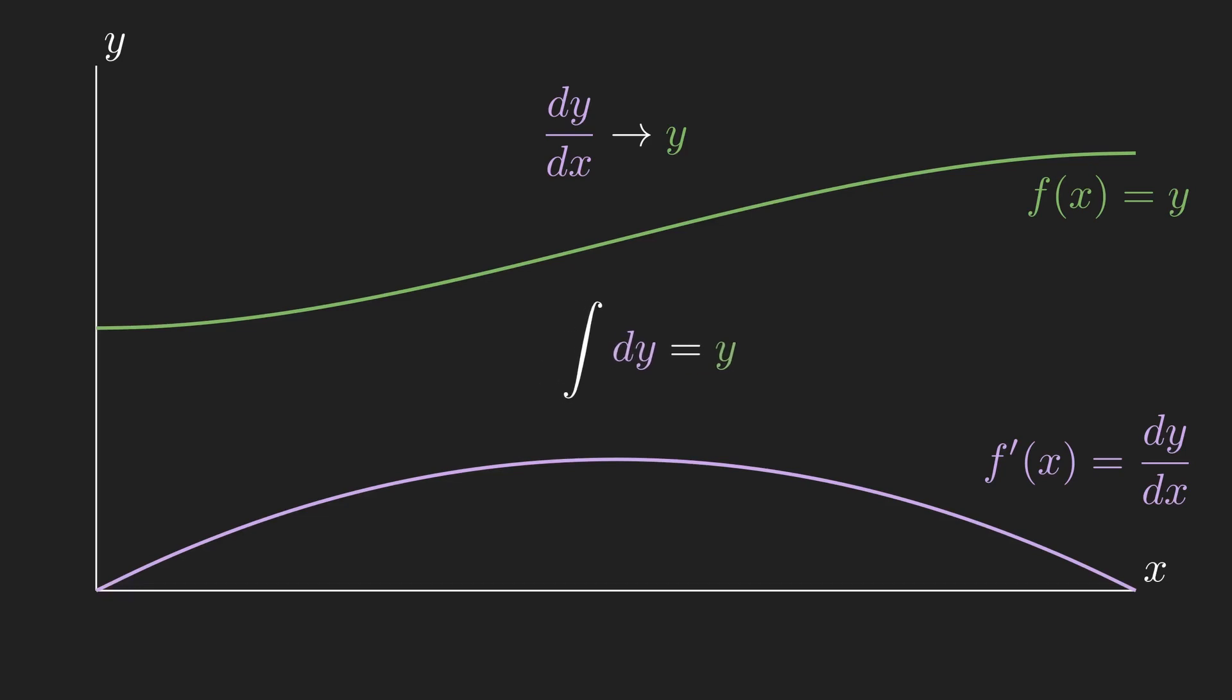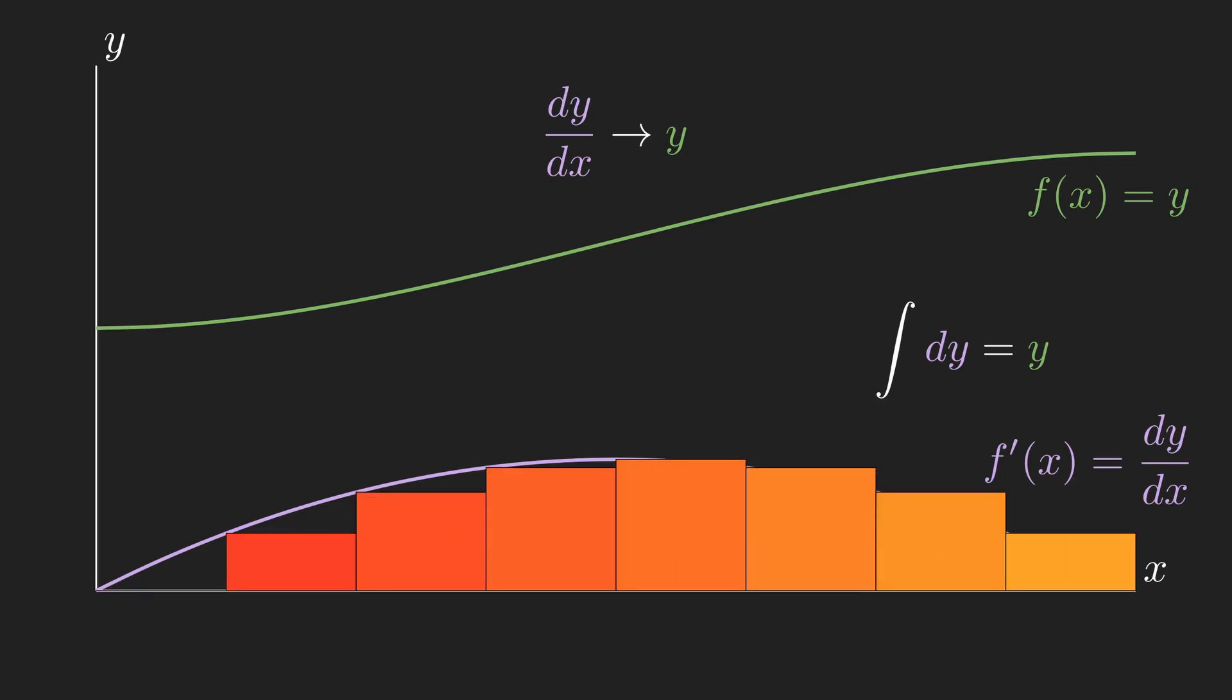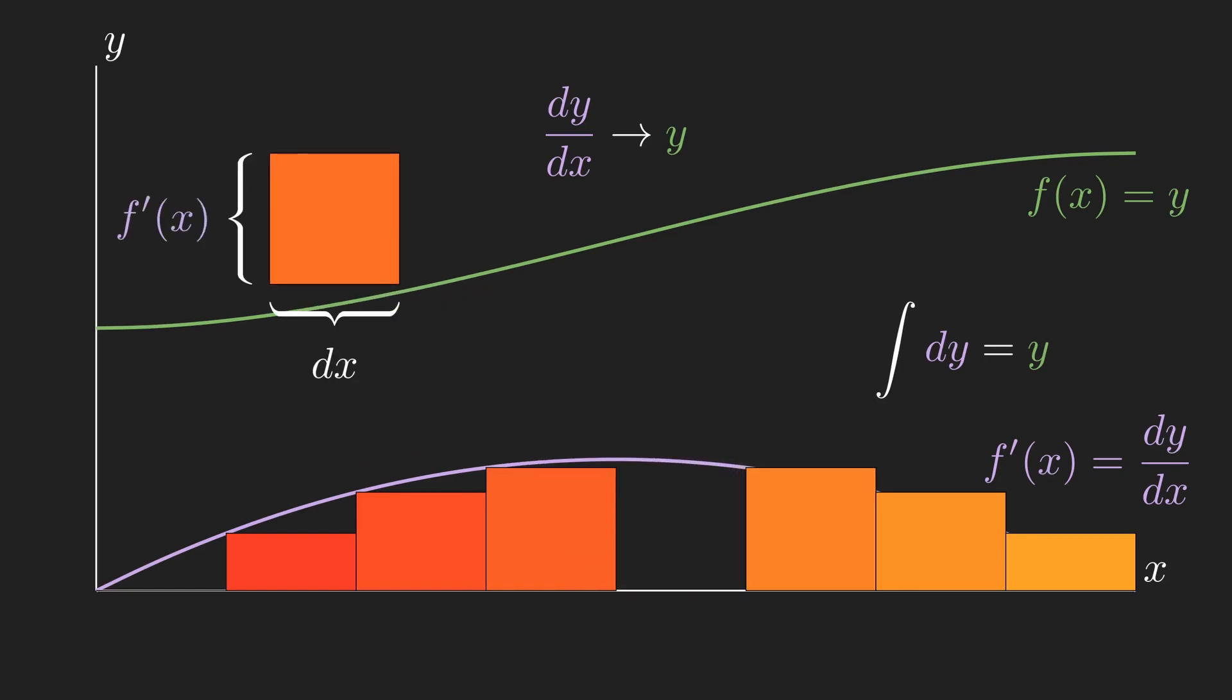This is interesting, but we still need to work out how to isolate our dy value. Let's see what happens if we try getting the area under the curve of our derivative using rectangles. As before, the width of each rectangle is equal to dx, and the height in this case is equal to f dash of x.